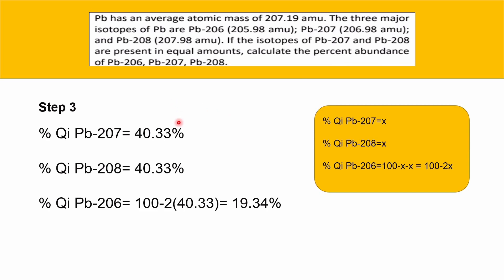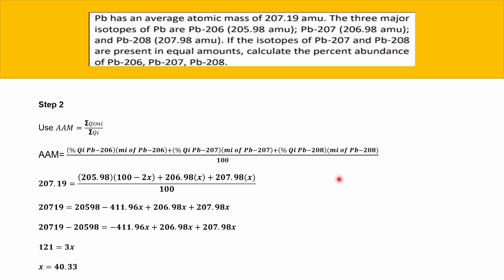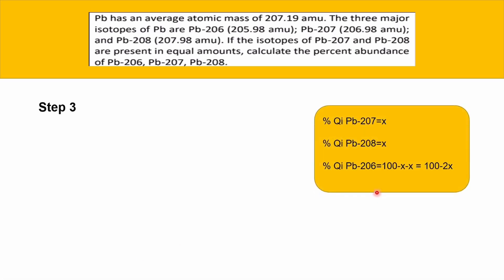In the final step, you'll get one mark for Pb-207, one mark for Pb-208, one mark for Pb-206, and also one mark for the assumption in step 1.